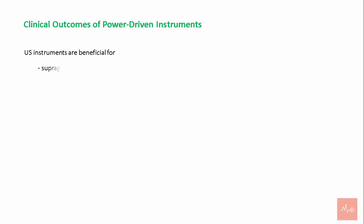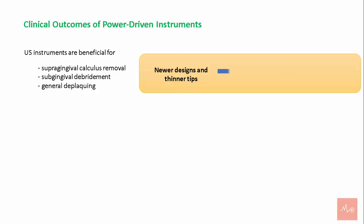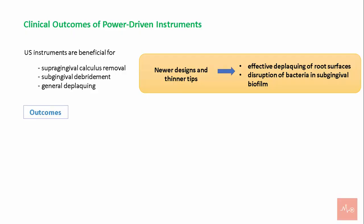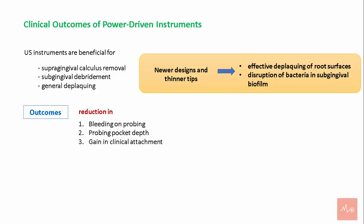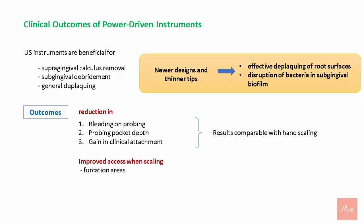Ultrasonic instruments are beneficial for supragingival calculus removal, sub-gingival debridement, and general deplaquing. Newer designs and thinner tips are effective in deplaquing root surfaces and disrupting bacteria in the sub-gingival biofilm. Outcomes of ultrasonic scaler use include reduced bleeding on probing, reduced probing pocket depth, and gain in clinical attachment. These results are comparable to those achieved with hand scaling, and ultrasonic scalers also provide improved access when scaling in furcation areas.